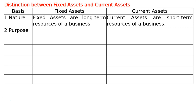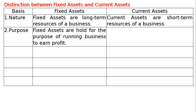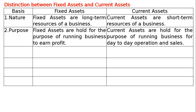The second basis is Purpose. In case of Fixed Assets, Fixed Assets are held for the purpose of running the business to earn profit. In case of Current Assets, Current Assets are held for the purpose of running the business for day-to-day operations and sales.